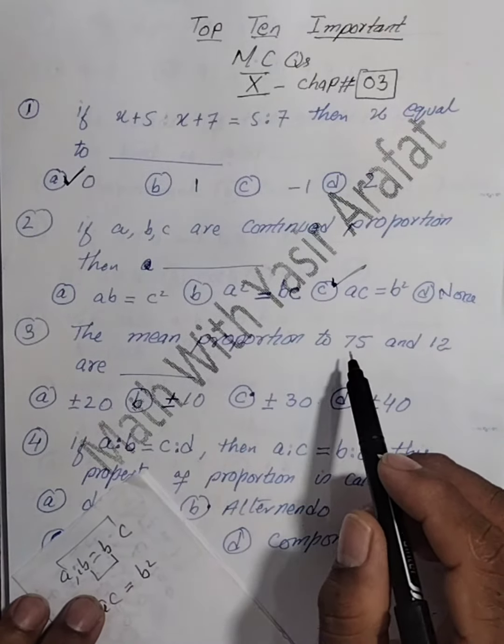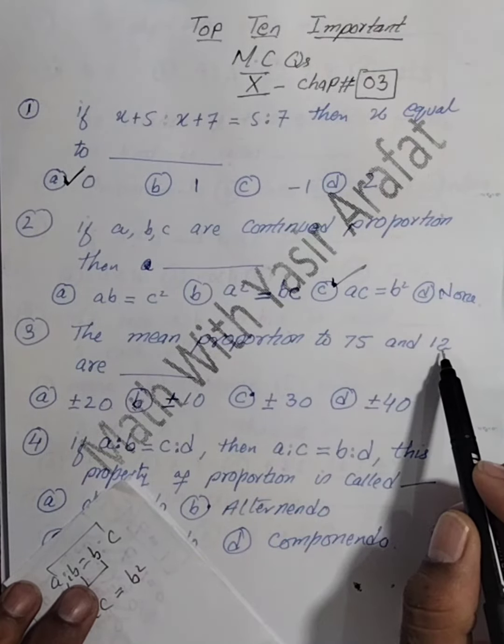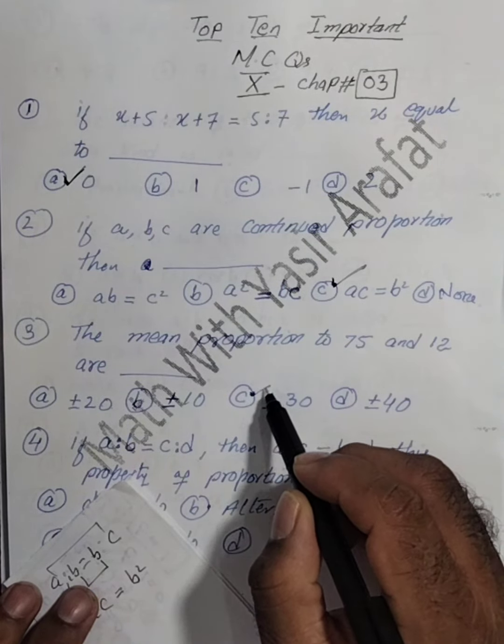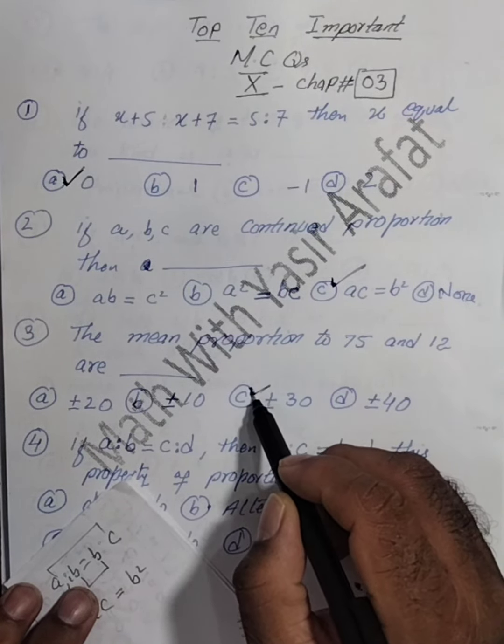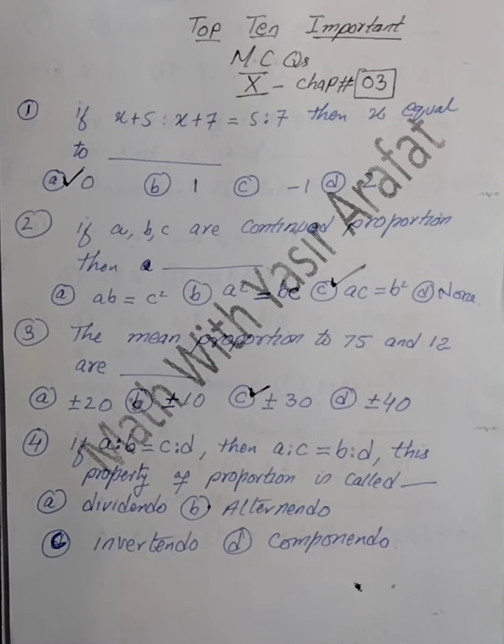The mean proportion of 75 and 12 is plus minus 30.